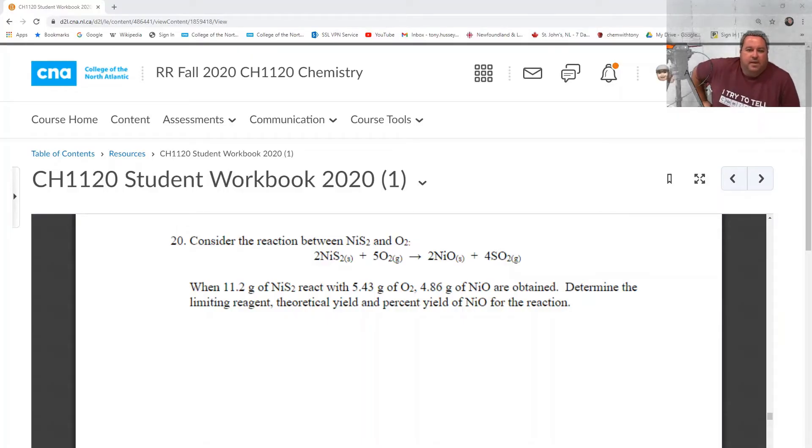Alright, this is a combination of a limiting reagent problem and a percent yield problem. It's number 20 in the workbook from unit 5, and we're going to try this one now. So we can see the reaction is given and it's balanced.